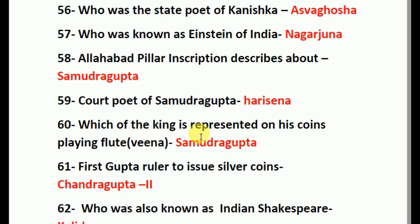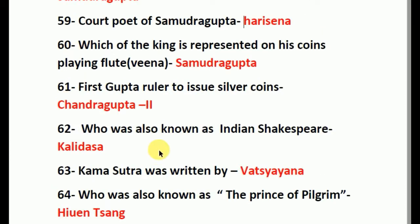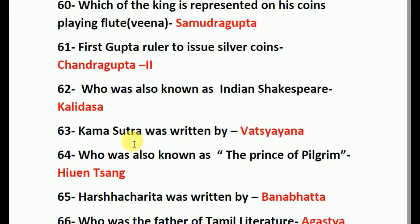Which king is represented on his coins playing the flute? This is a most important question. The answer is Samudragupta. First Gupta ruler to issue silver coins: Chandragupta II. Who was also known as the Indian Shakespeare? The answer is Kalidasa. Kama Sutra was written by Vatsyayana.